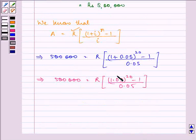Now, the value of this term is given to us in the question itself. So, on using that value, we have R bracket 2.655 minus 1 upon 0.05.